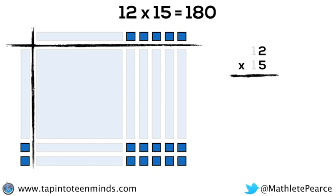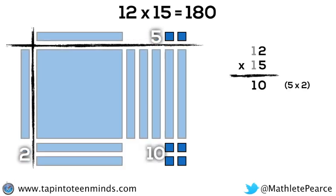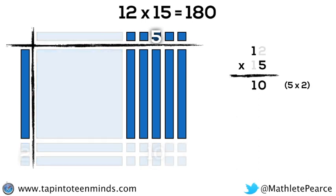First, we start with multiplying 5 by 2 to get 10. Then, we look at 5 times 1. But wait, it's really 5 times a 10 since that 1 in the 10s column is to represent the 10 rod. So we get a partial product of 50.